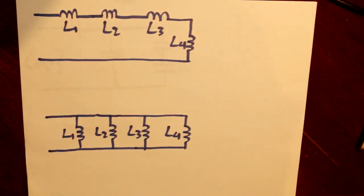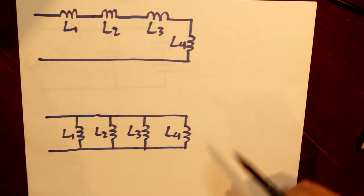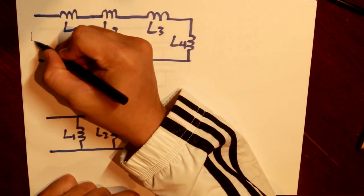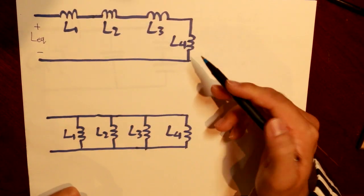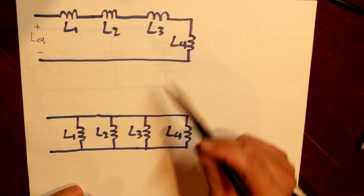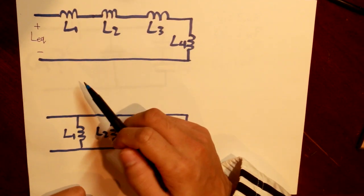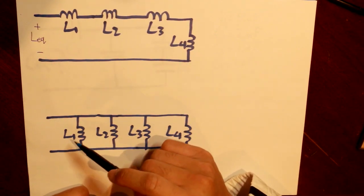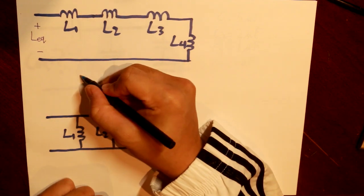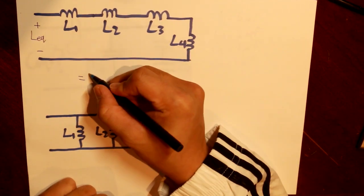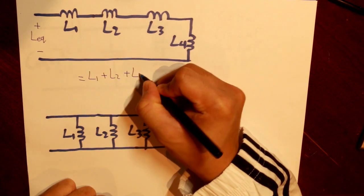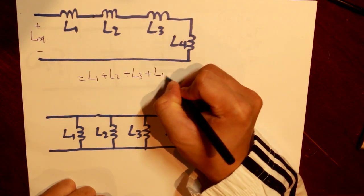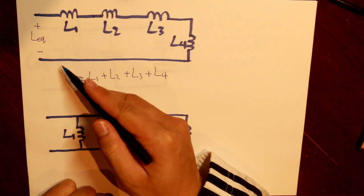Let's move on to inductance and inductors. To calculate our equivalent inductance when inductors are in series, we add all four inductor terms together — it is simply the same formula as resistors in series, with all values added in the numerator.